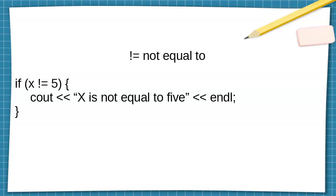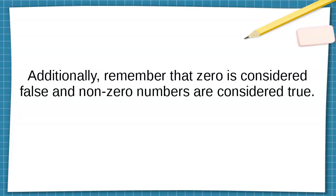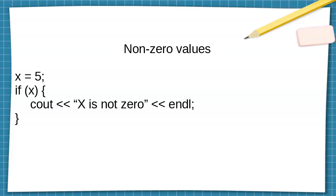Those are all your main comparisons. Another thing to keep in mind: zero is considered false and non-zero numbers are considered true. So if you do x equals five and then do 'if x', it would say 'x is not zero'. Also keep in mind: if you do x equals five with only a single equal sign, it might evaluate that as assigning x to five, and we're evaluating five — which means it's true — even though it's not checking to see if x is five.